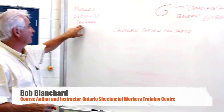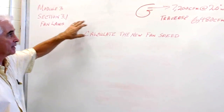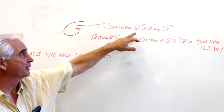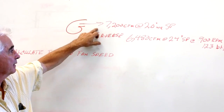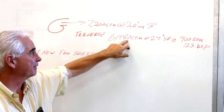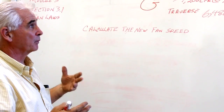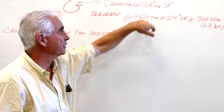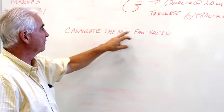This is an example of the fan laws from Module 3, Section 1. The question says the designer wants 7,200 CFM out of the system, designed to work at 2 inches of water column. The technician took a traverse and found there's only 6,480 CFM, but measured the static at 2.4. So the system is more restrictive than the designer calculated — the static is higher, airflow is less. The fan turns at 900 RPM. Calculate the new fan speed.